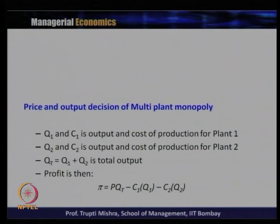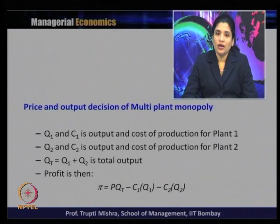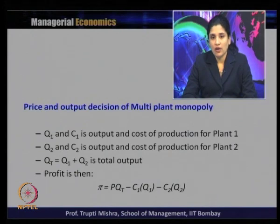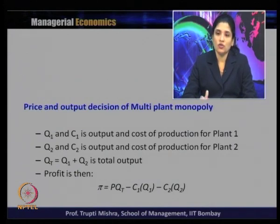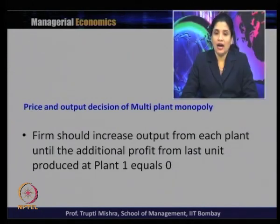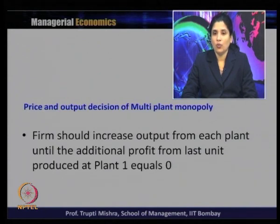If Q1 is output and C1 is cost for plant 1, and Q2 and C2 for plant 2, then total output Q = Q1 + Q2, and profit = P·Q − C1(Q1) − C2(Q2). The firm increases output in each plant until the additional profit from the last unit reaches zero. To maximize profit, we set dπ/dQ1 = MR − MC1 = 0, giving MR = MC1. The same applies to plant 2: MR = MC2.